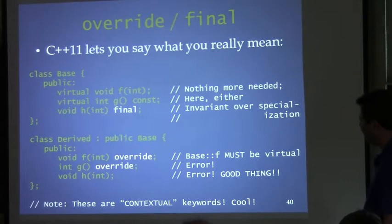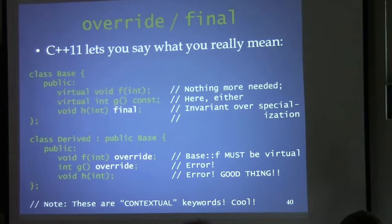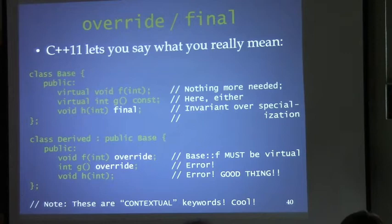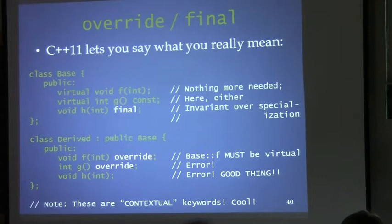A quick syntax question: is `virtual` allowed alongside `override`? Can you just put `virtual` there? Since `virtual` is kind of optional for overrides before C++11, it would presumably remain so. But since `override` implies virtual — it's impossible for `override` to compile without the function being virtual — putting `virtual` there is just redundant.